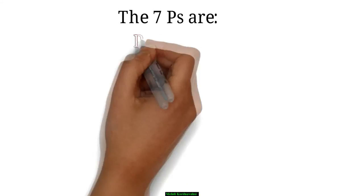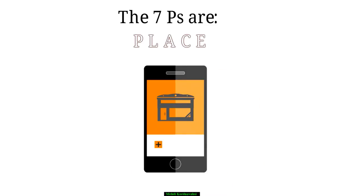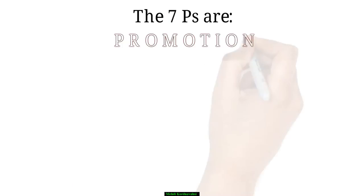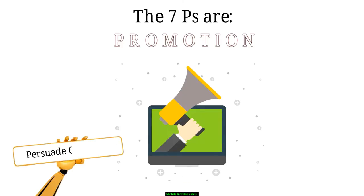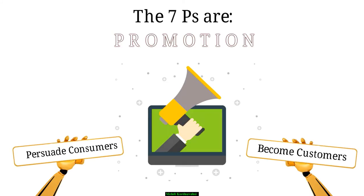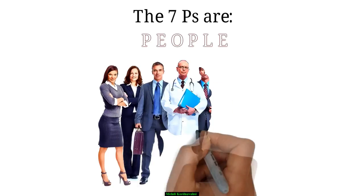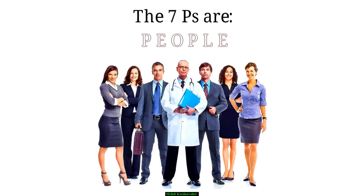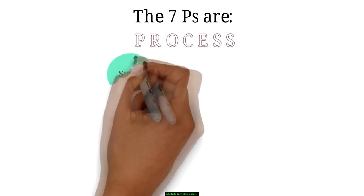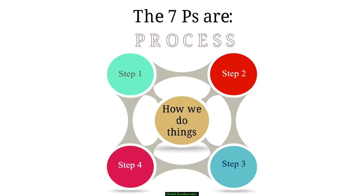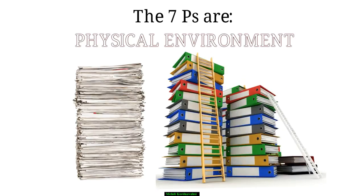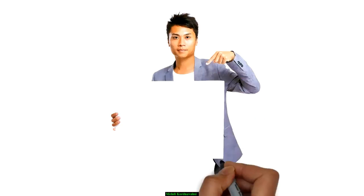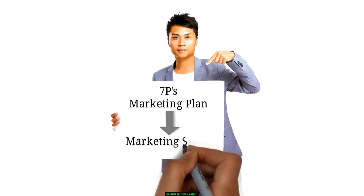You have to consider price setting, discounting, guarantees, and payment terms as well as credit collection. Place: this is your practice location, whether it is a storefront or an online service. Promotion: this refers to the channels you use to communicate the benefits and value of your product to persuade consumers to become customers. People: your people are your practice, so getting the right people in the right roles with the right skills is essential. Process: these are the easy-to-follow steps of how we do things, enabling staff to be more proactive. Physical Environment: all the necessary paperwork and physical elements that support the practice's services. It's all about practicing the seven P's in your marketing plan to ensure marketing success.